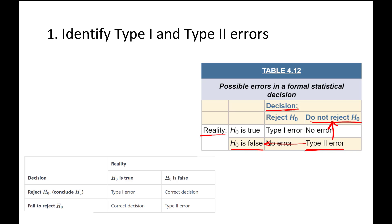In real life, you're usually not going to know what the population values are. If we had the population values at the beginning, we wouldn't need to conduct a hypothesis test. Sometimes you'll learn these values after the fact — for example, if you get access to population data later. But most of the time, we won't know for sure if we've committed a type 1 or type 2 error.